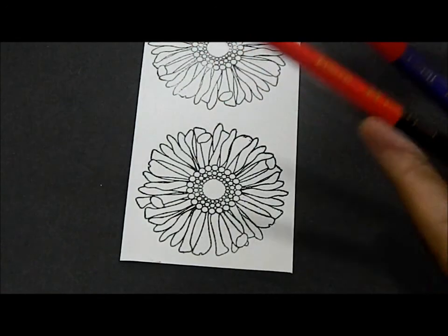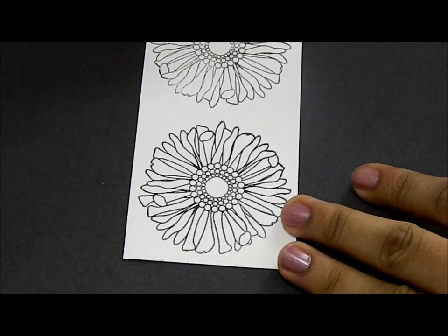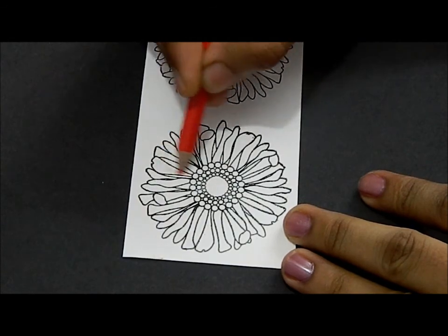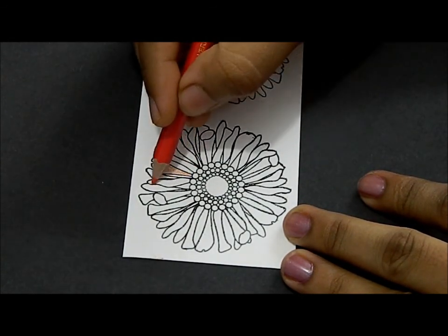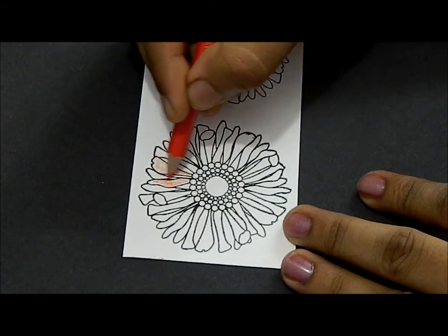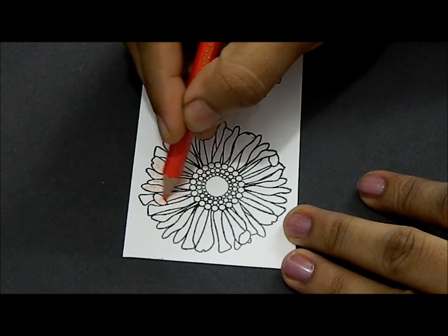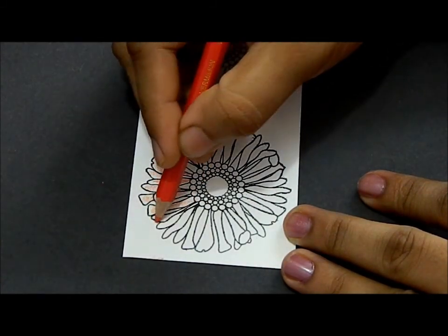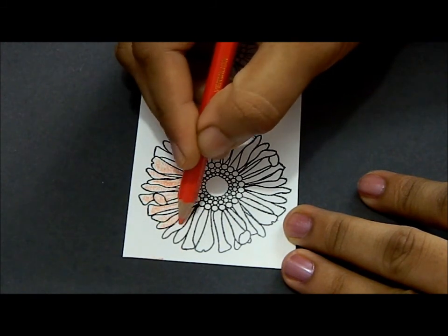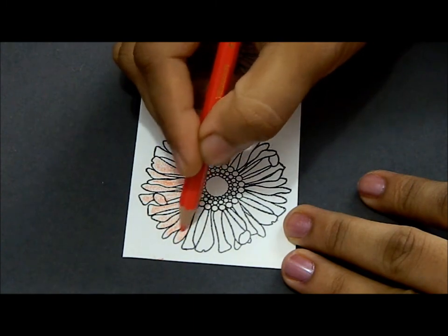So I'll start out with my lightest, this is the vermilion, and put down a very light shade. Just cover the whole flower. Do not press down hard, just rough, just go as fast as crazy. If you're starting out, slow is fine. Just lay down a light base.